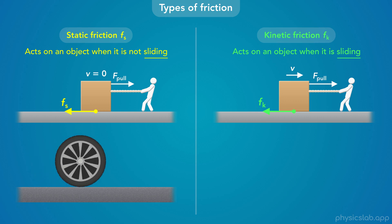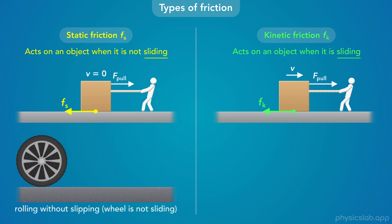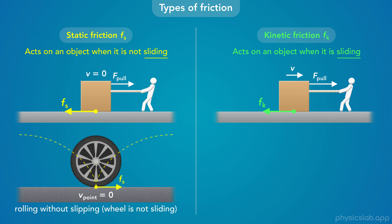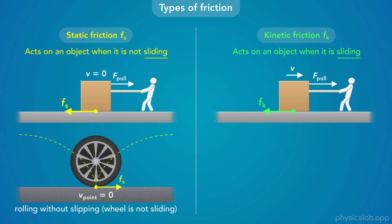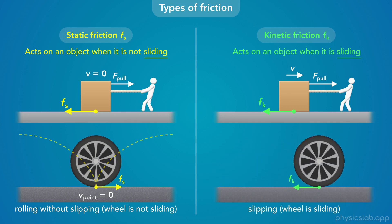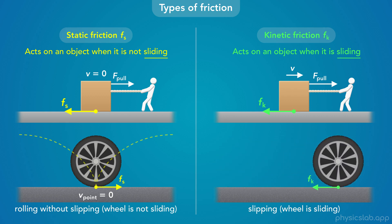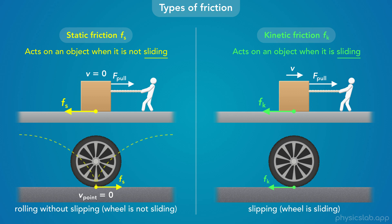Notice that we're specifically using the word sliding, not moving. This is important because some objects can also roll along a surface. If this wheel is rolling along the ground — rolling without slipping — it turns out that the point on the wheel that is touching the ground at any moment is not moving relative to the ground. So the friction force that acts on the wheel at that point is a static friction force. The wheel is moving, but it's not sliding. On the other hand, if the wheel was sliding across the ground, the friction force on the wheel would be kinetic friction. Static friction exists when the object is not sliding, and kinetic friction exists when the object is sliding, which is why kinetic friction is sometimes referred to as sliding friction.